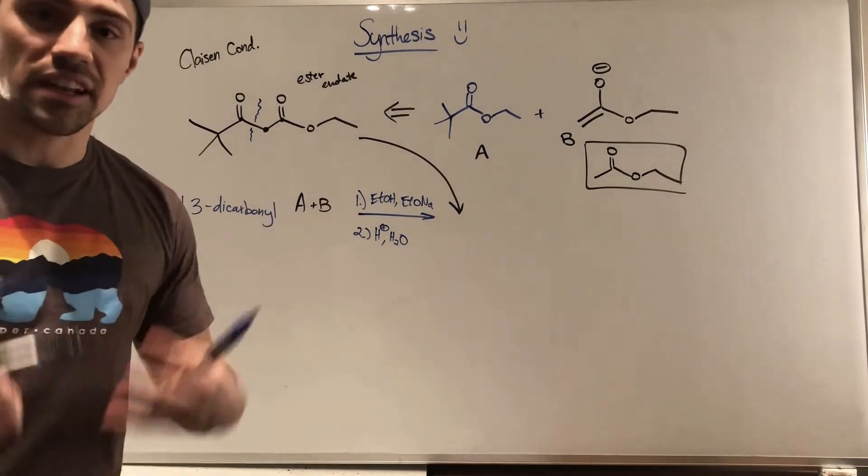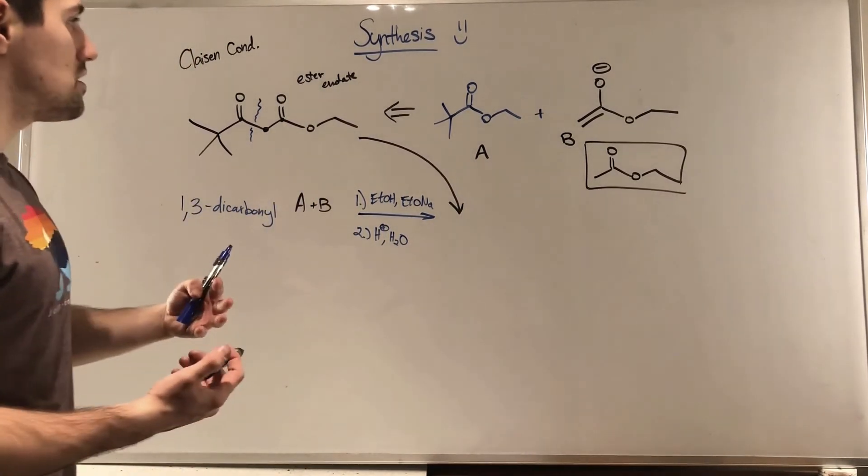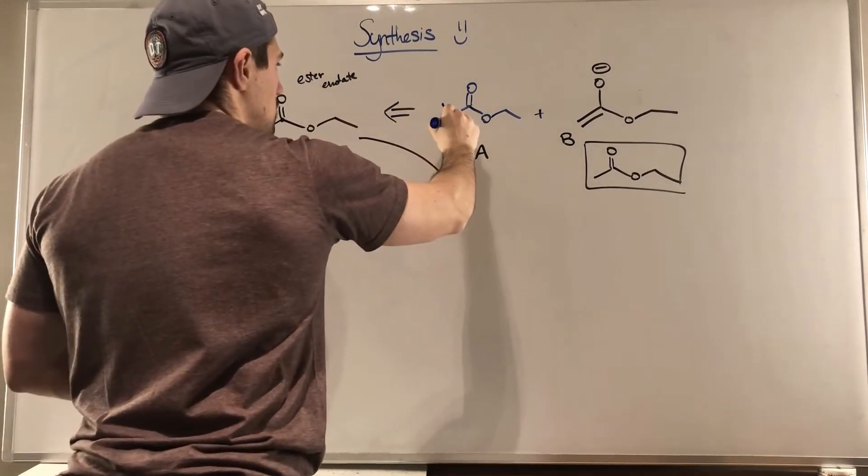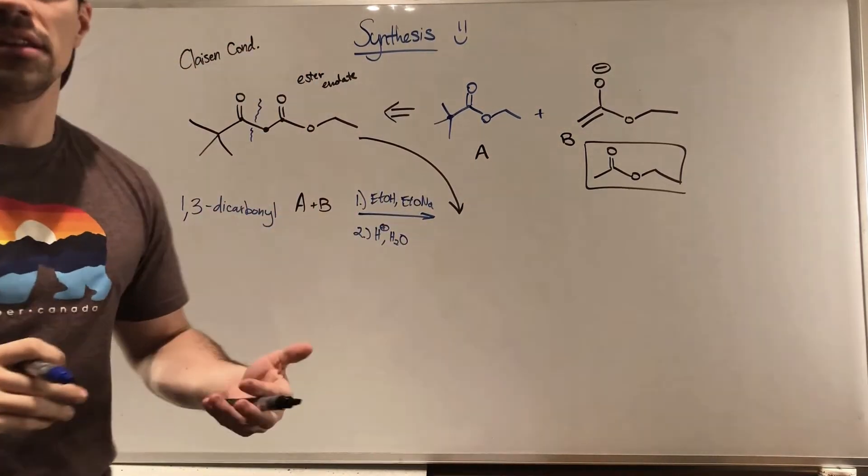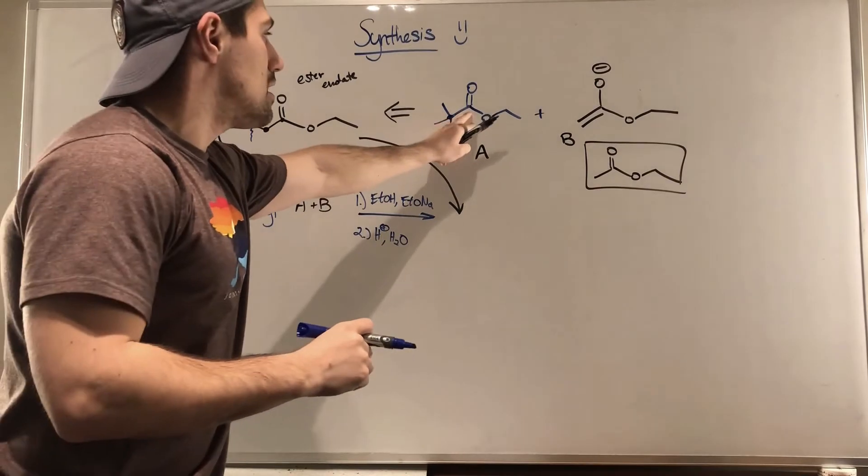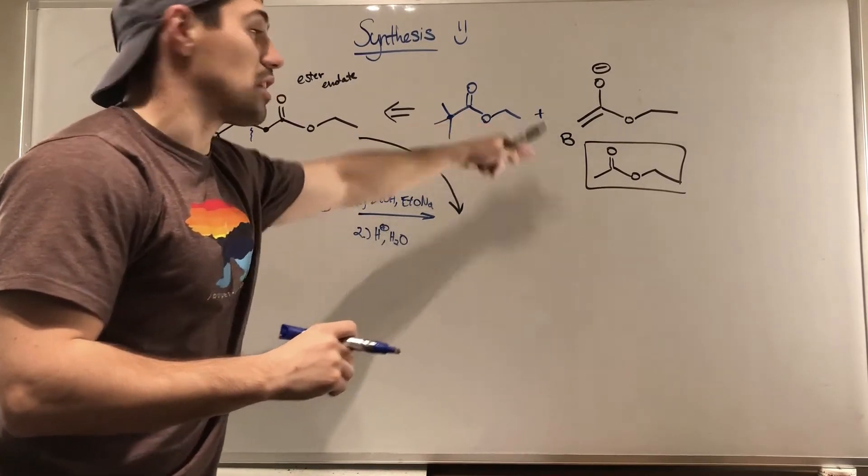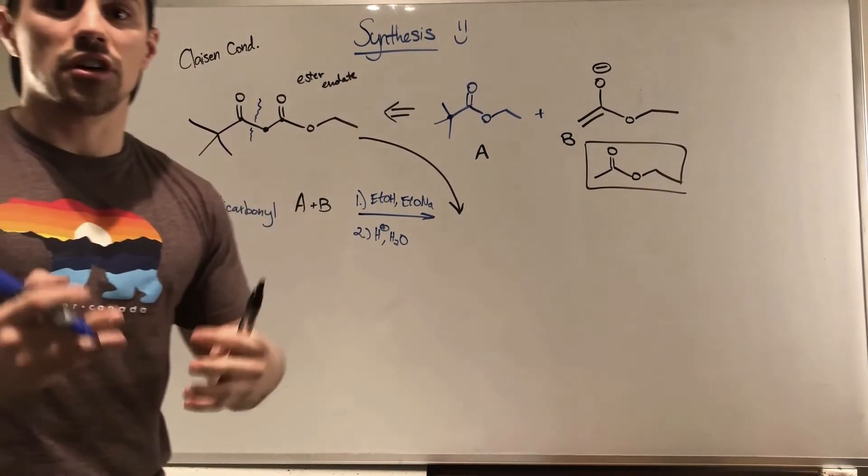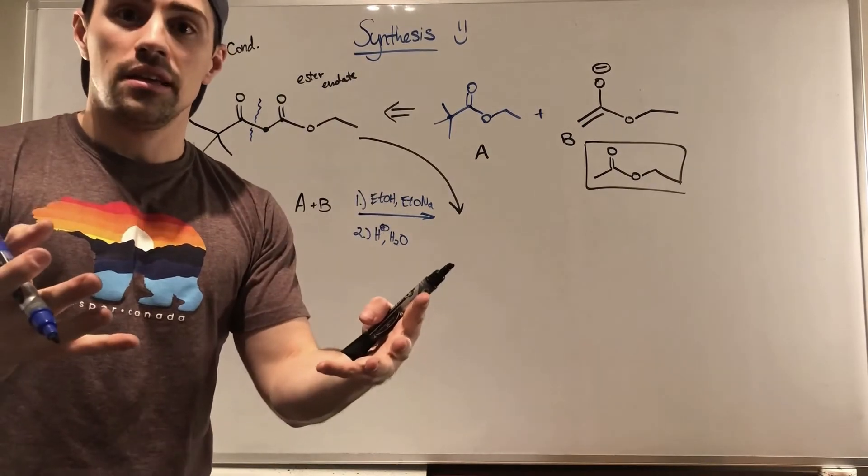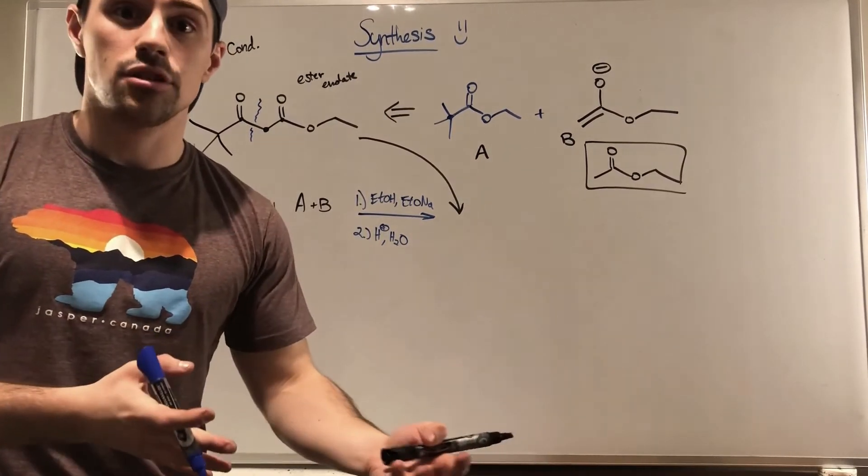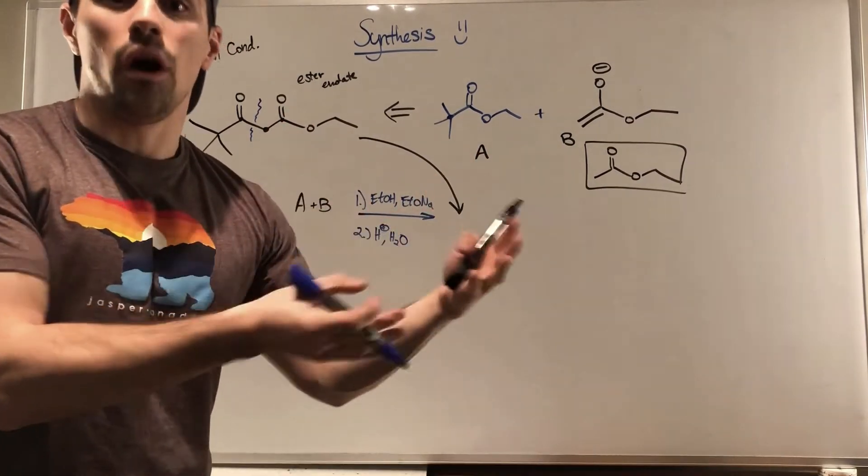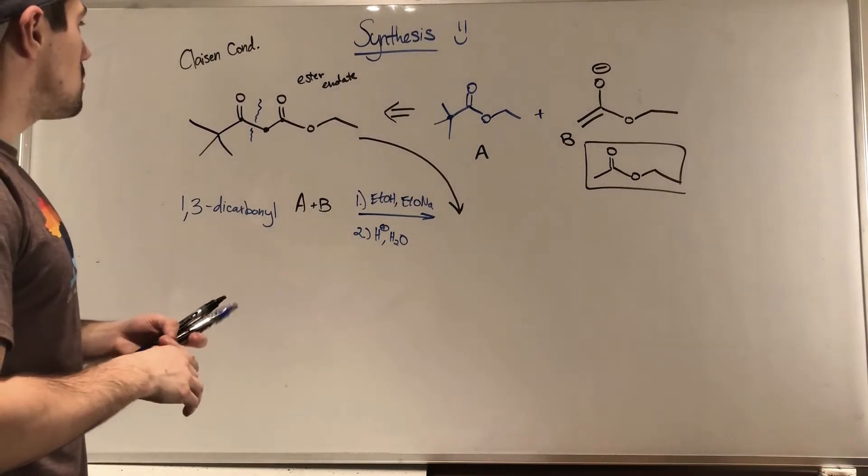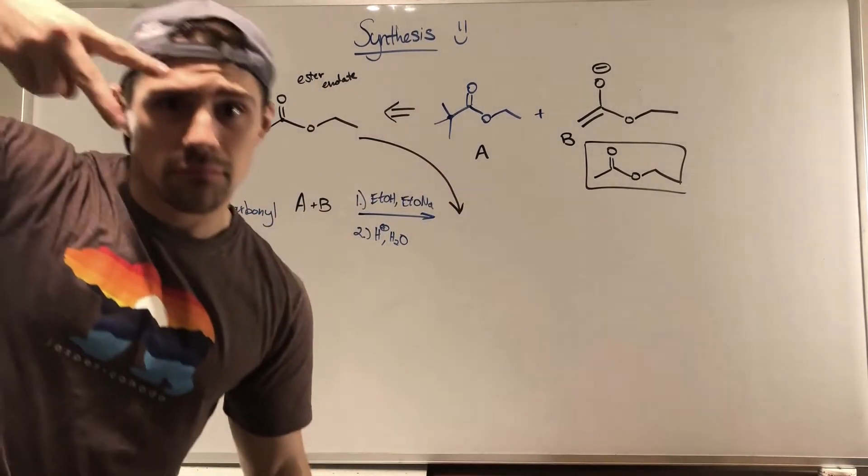So I think it's safe to say that if we had ester A and ester B and we did A plus B, we would absolutely get the product drawn up here. I think this is also a good synthetic design because if we look at this ester A, there's no way to make this ester enolate. There's no protons here on that alpha carbon to make an ester enolate and clearly we have part of the ester over here. We have nothing to deprotonate. So I think this is as simple as it can get. Okay, so what I'm going to do is I'm going to erase this and I'll throw up example number two.